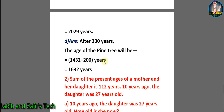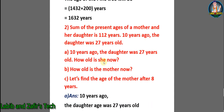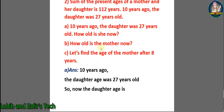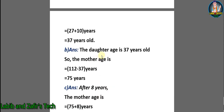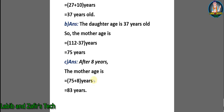Answer D: After 200 years, the pine tree will be 1,432 plus 200 equals 1,632 years. Creative question number 2: The sum of the present ages of a mother and daughter is 112 years. 10 years ago, the daughter was 27 years old. Answer A: The daughter's present age is 27 plus 10 equals 37 years. Answer B: The mother's age is 112 minus 37 equals 75 years. Answer C: After 8 years, the mother's age will be 75 plus 8 equals 83 years.